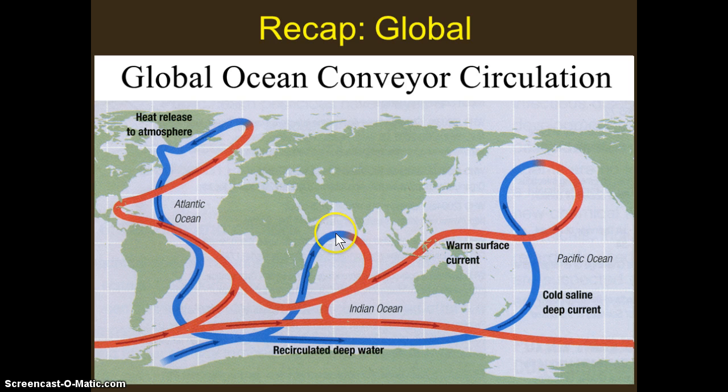That's how deep water formation drives this deep water portion of the conveyor belt and how it returns at the surface in very important spots in the ocean, which drives it back to the colder spots to sink once more and form this global ocean conveyor belt.